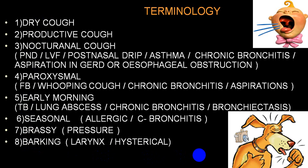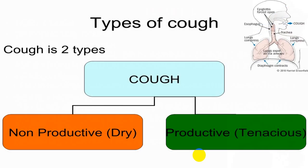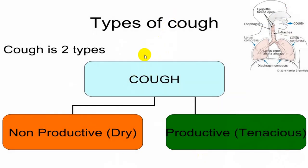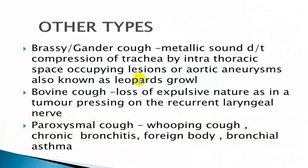By and large, we divide cough into two big groups: non-productive or dry cough, and productive cough with sputum. Brassy cough, also called gander cough, has a characteristic metallic sound, frequently due to compression or obstruction of the trachea by an intrathoracic space-occupying lesion. Bovine cough has a loss of expulsive nature due to a tumor pressing on the recurrent laryngeal nerve. Paroxysmal cough comes in episodes, common in whooping cough, chronic bronchitis, foreign body, and bronchial asthma.